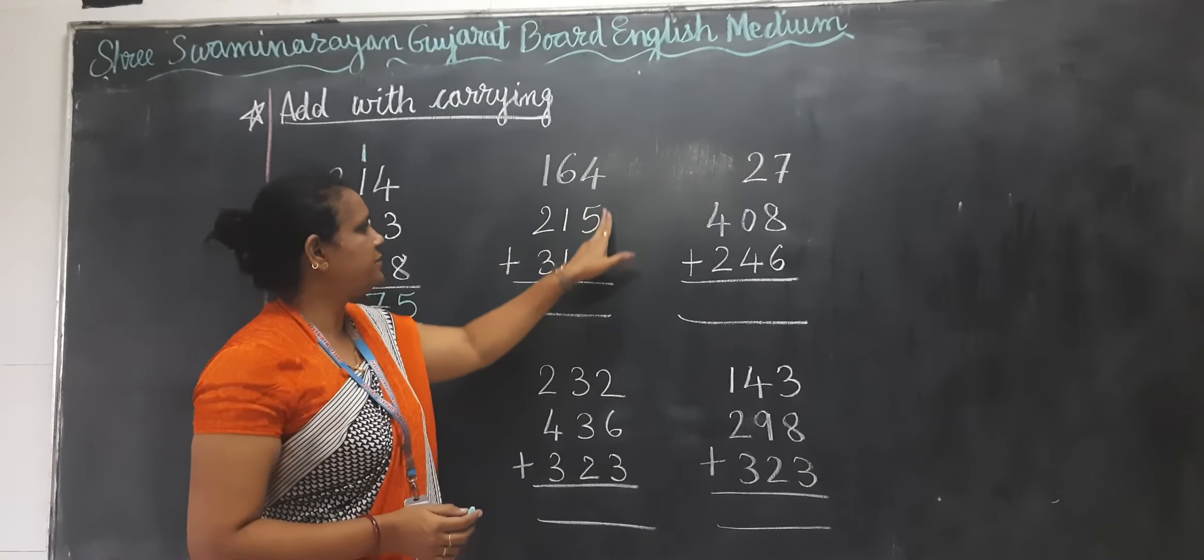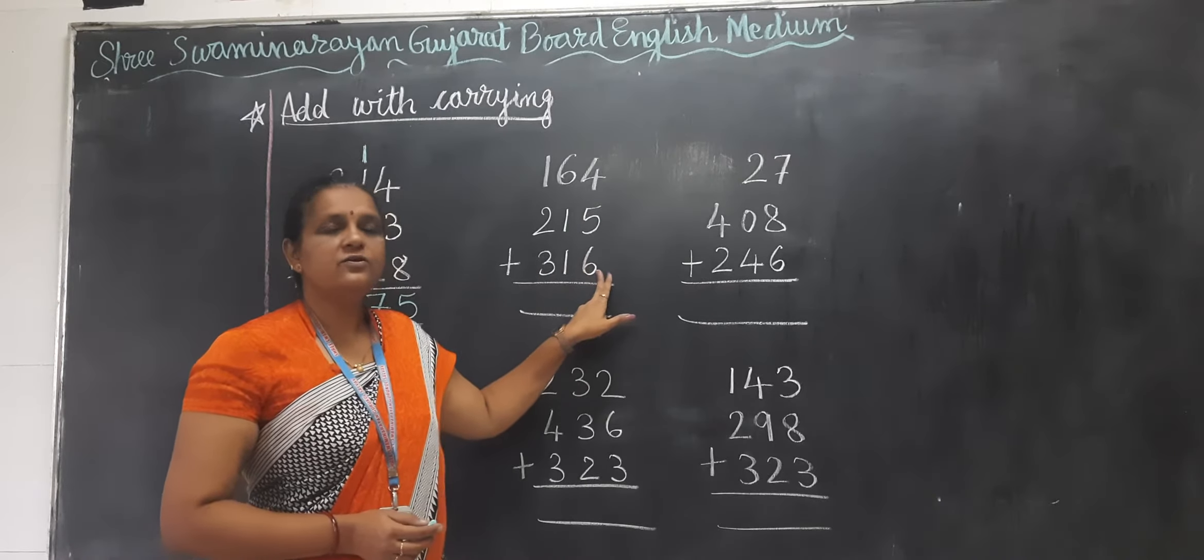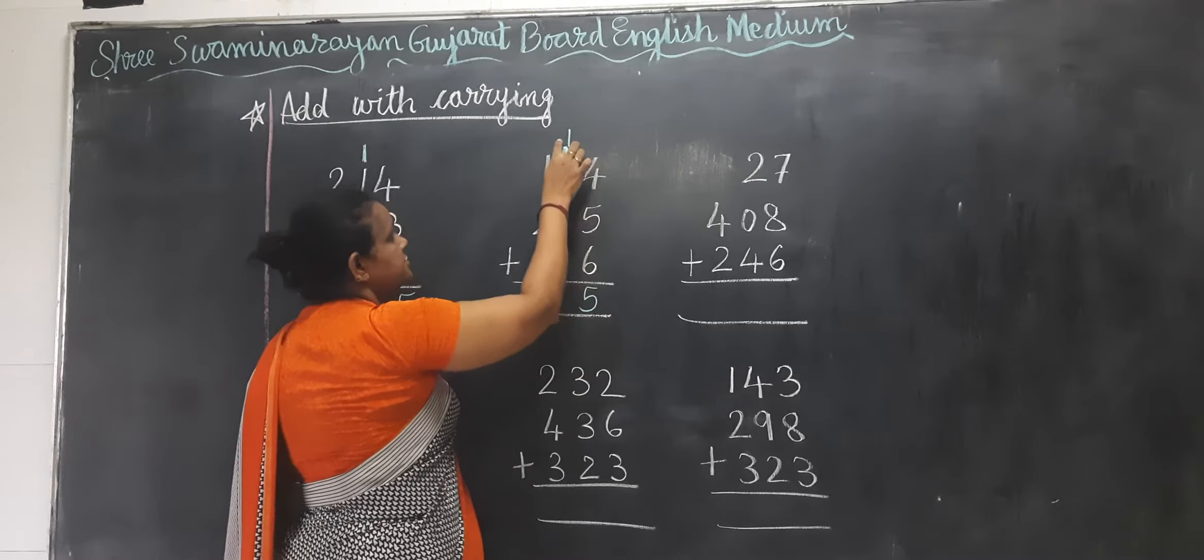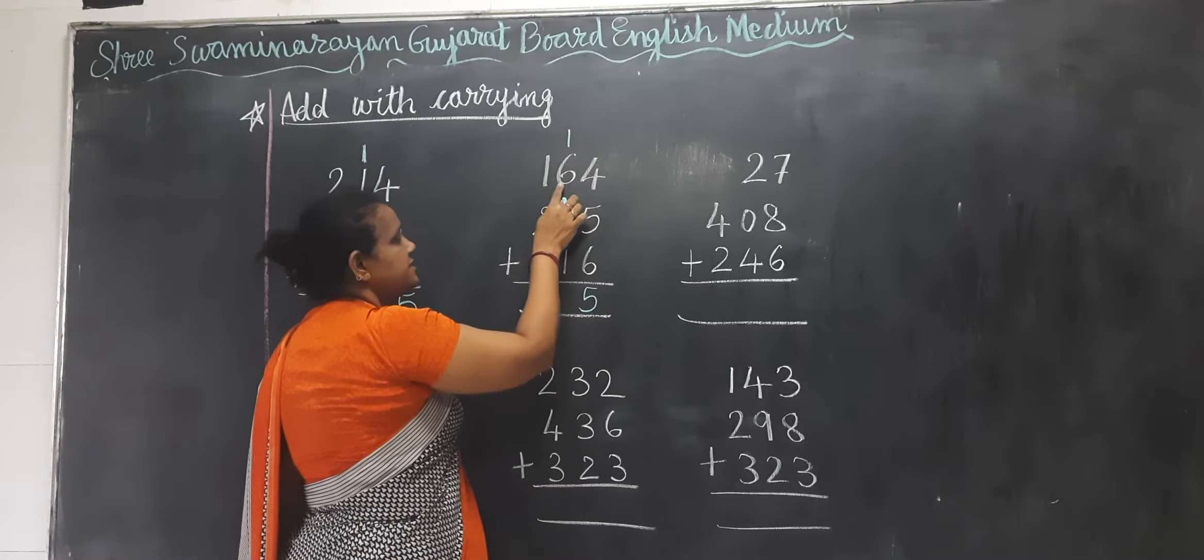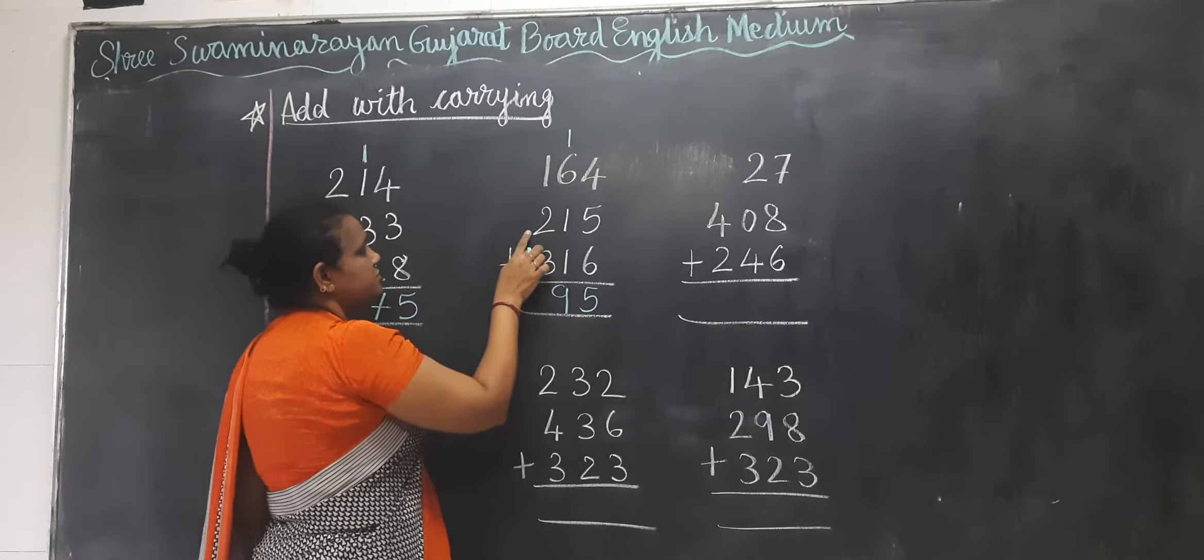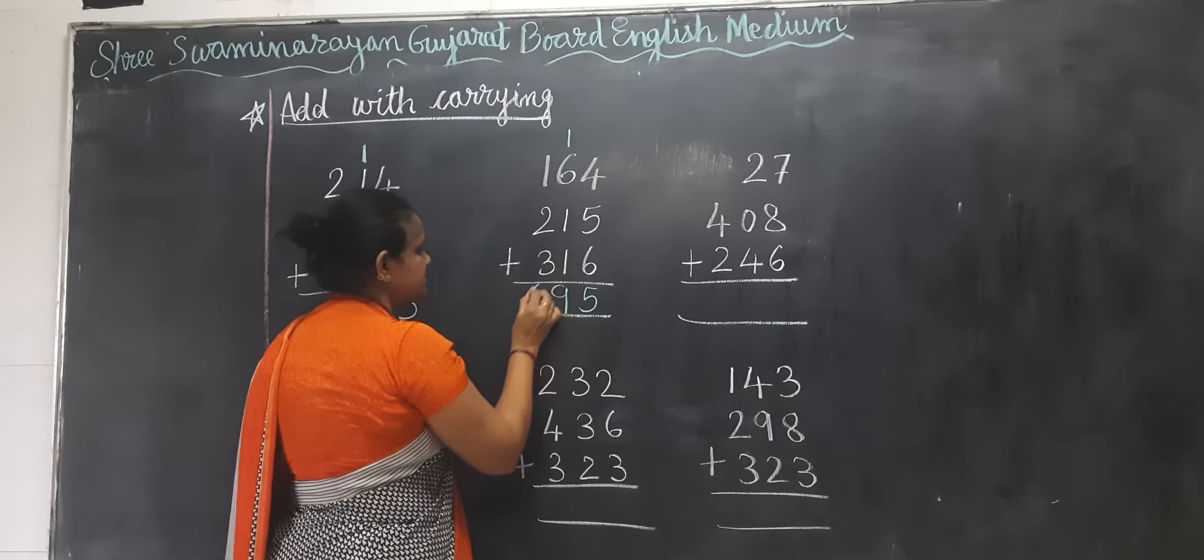Next one. 4 plus 5 equals 9. 9 plus 6 equals 15. 6 plus 1, 1 plus 6 equals 7, 8, 9. Now 1 plus 2 equals 3. 3 plus 3 equals 6.